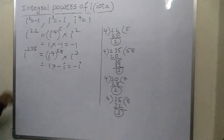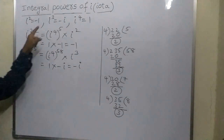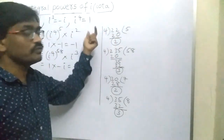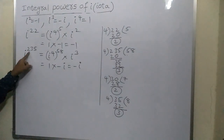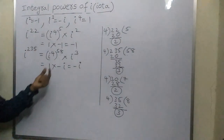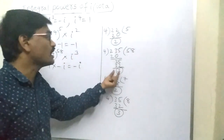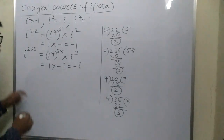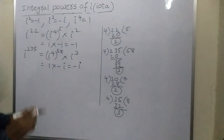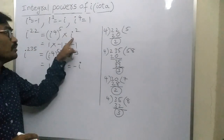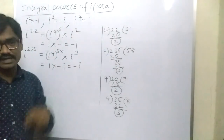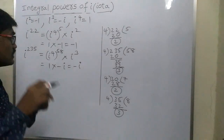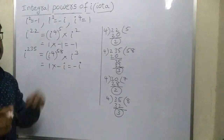On observing, i²² depends upon i raised to the remainder when dividing 22 by 4. Similarly, i²³⁵ also depends upon i raised to the remainder when dividing 235 by 4. So we can directly write i²² as i raised to the remainder, and similarly i²³⁵ directly as i³.